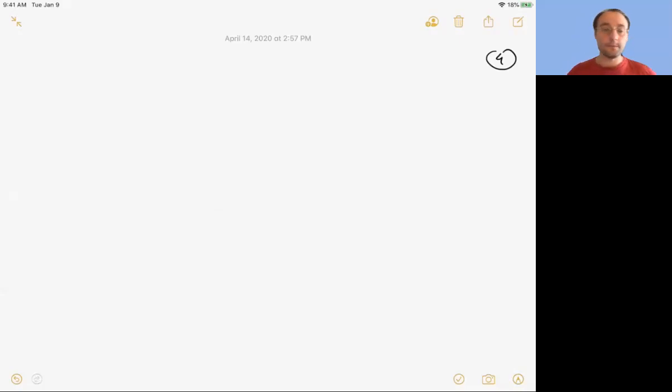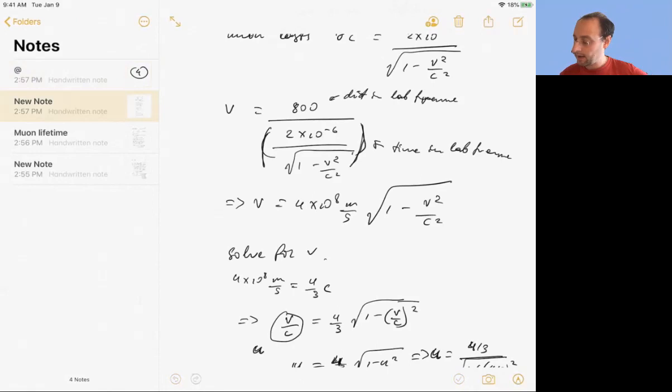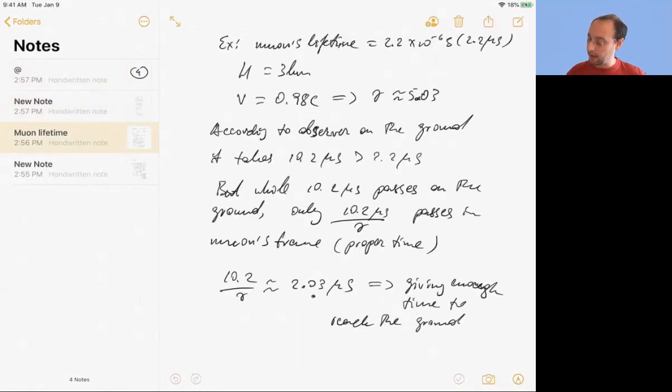Okay, so this is part three. I misspoke a little bit at the last lecture when I talked about muon's lifetime. I said 10.2 divided by gamma is 2.07, it's 2.03, and that's important because now we'll do the same analysis from muon's frame and we'll also get 2.03.